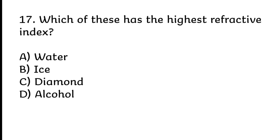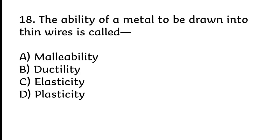Which of these has the highest refractive index? Correct answer is C, diamond. The ability of a metal to be drawn into thin wires is called ductility. Correct answer is B, ductility.